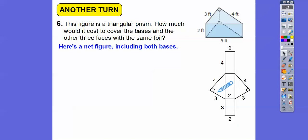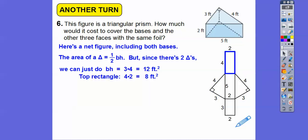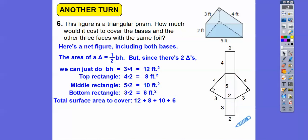Let's find the area of all the pieces. For the two triangles: a triangle is one-half base times height, but since there are two triangles we can disregard the one-half and just do base times height — three times four is twelve. The top rectangle is four by two, so eight. The middle rectangle is five times two, so ten. The last rectangle is three times two, so six. The total surface area is the sum of all of these: 36 square feet.